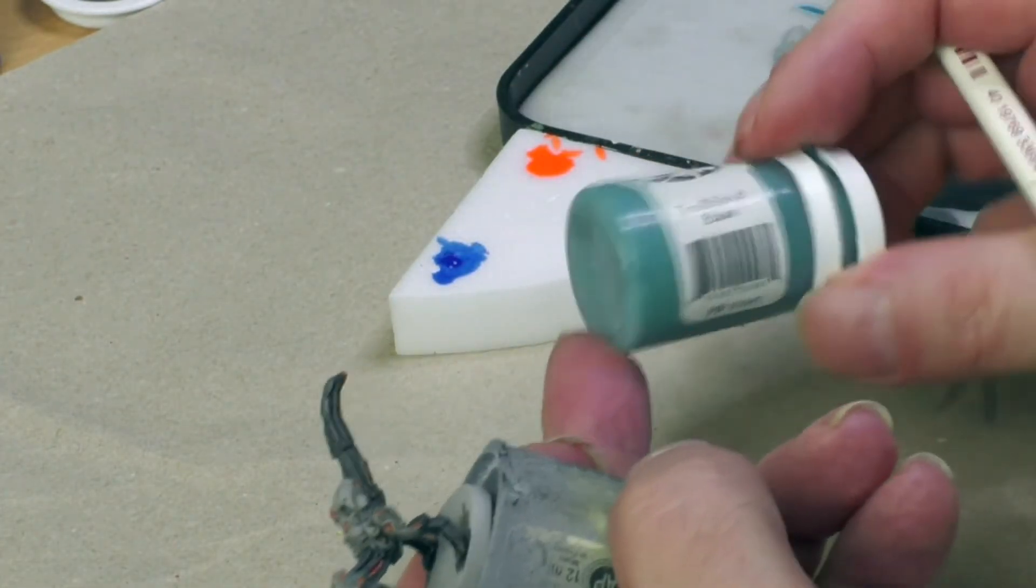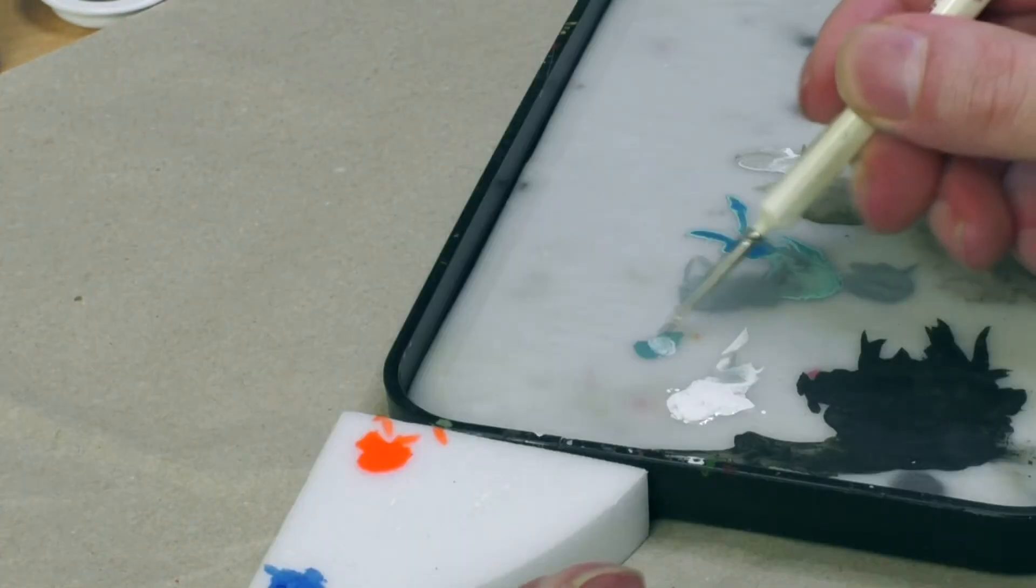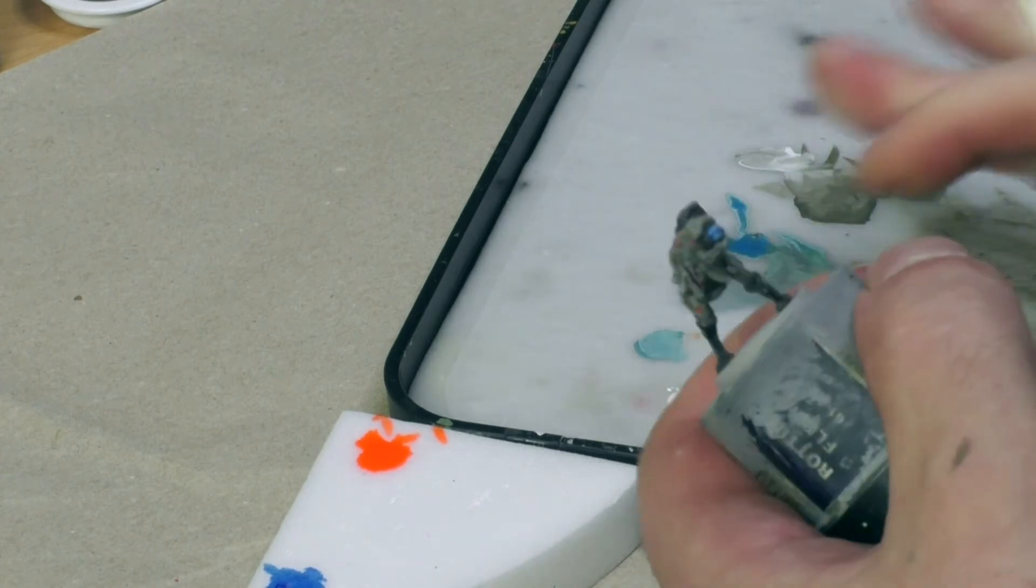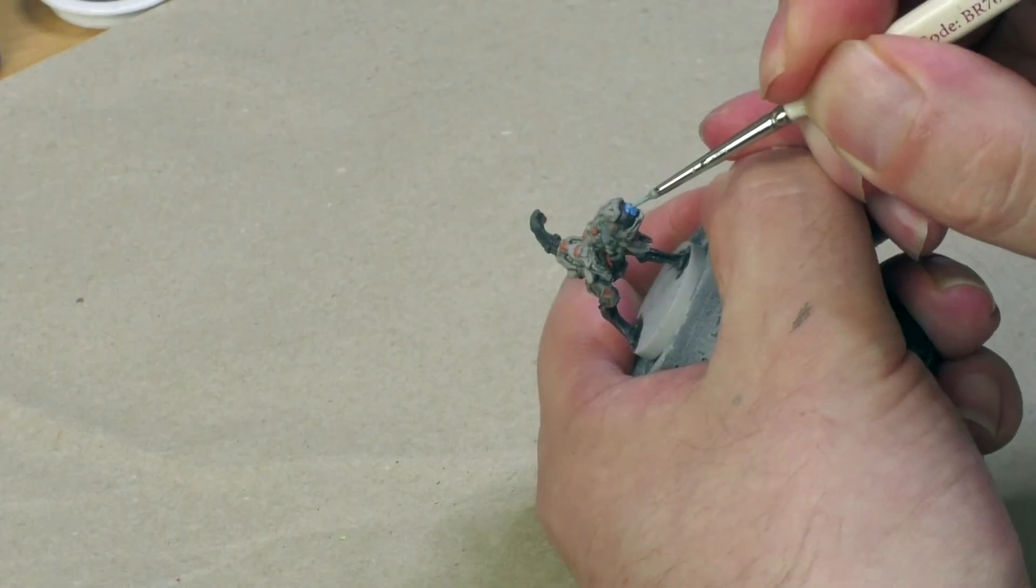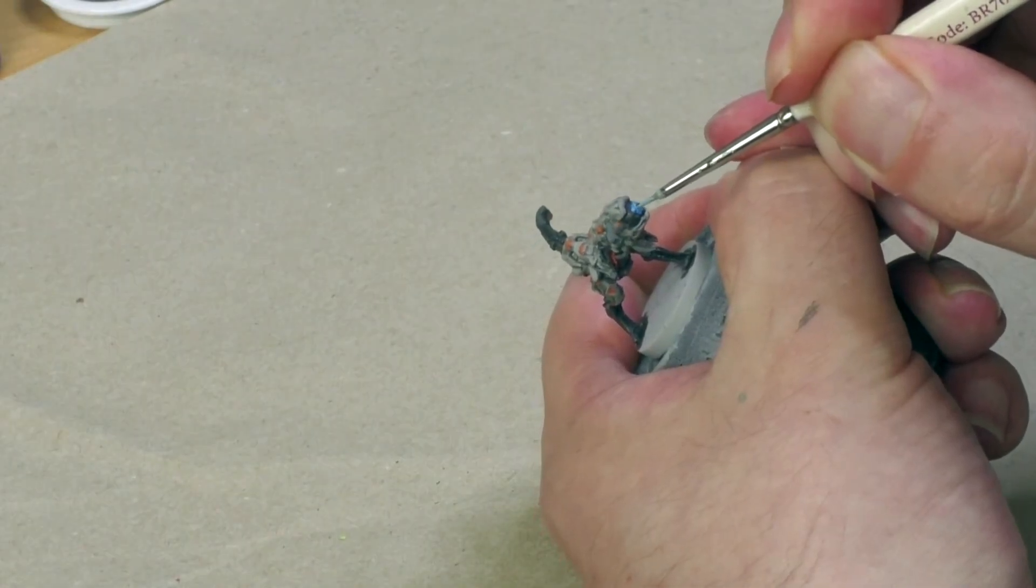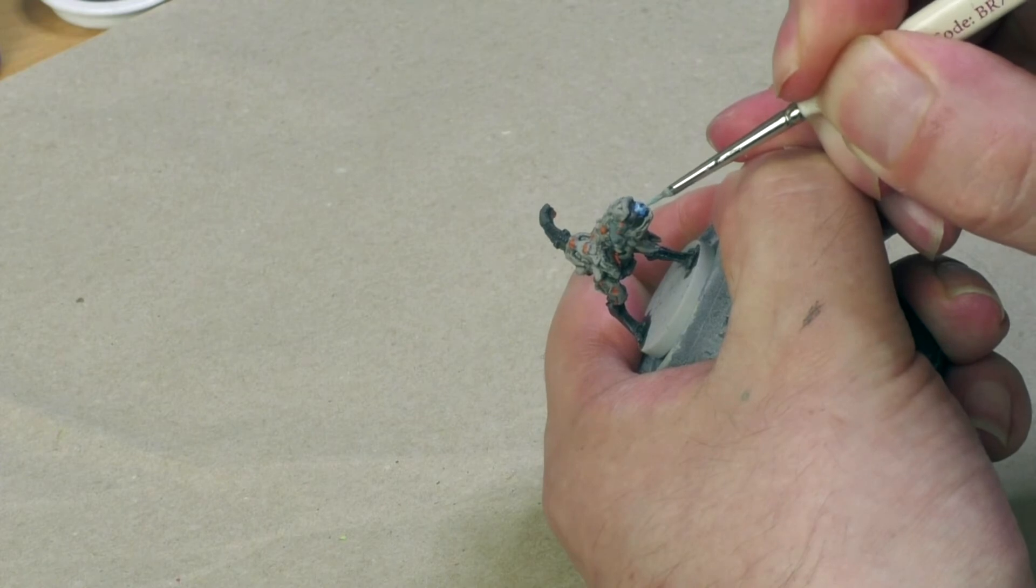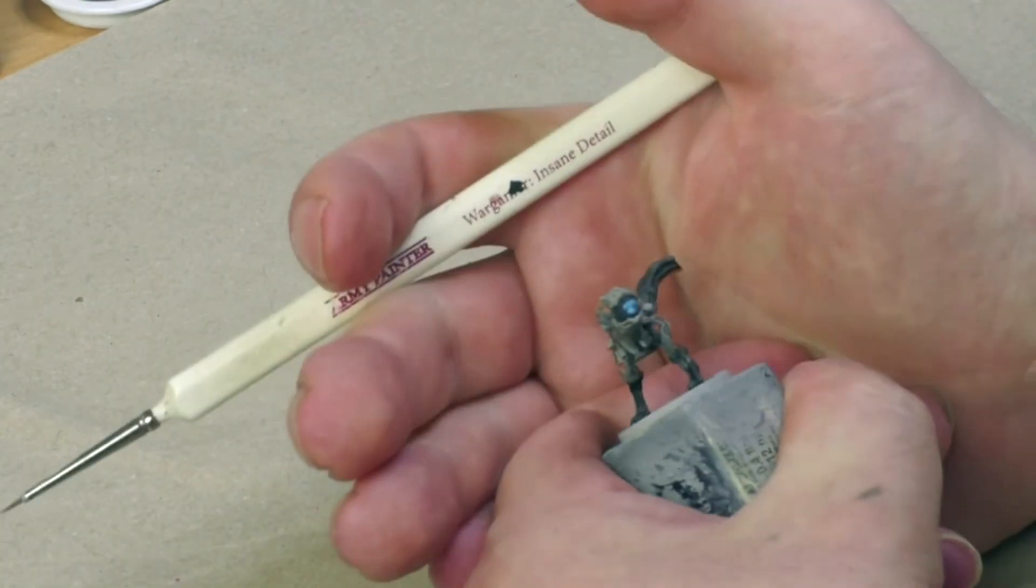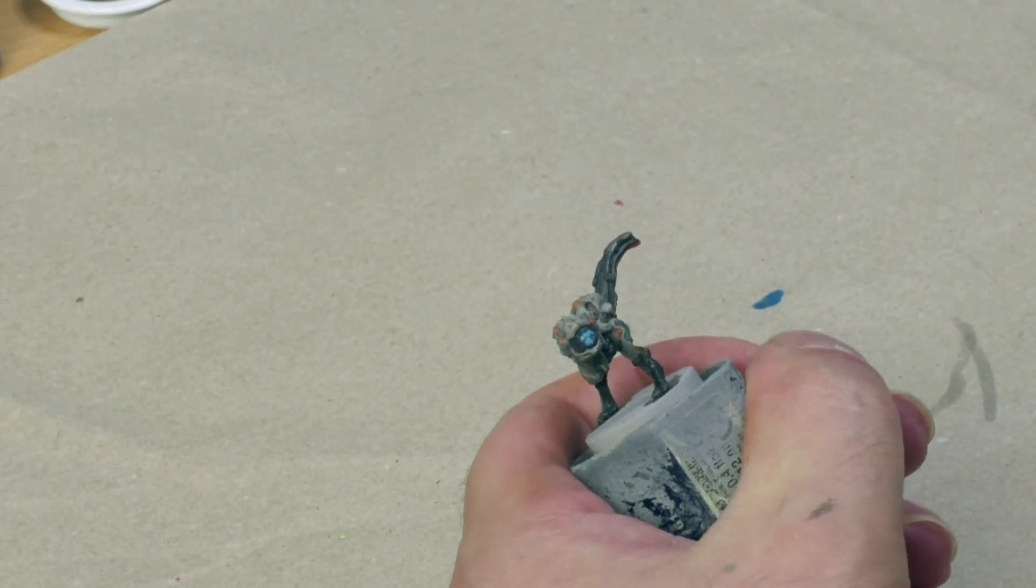Let's enhance the contrast even more. I'm using a somewhat turquoise-y color, mixed with white, to accentuate just the three lenses. Again, this has to be dry before we can proceed. So let's use the time.